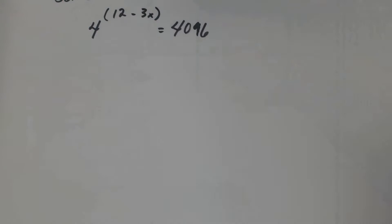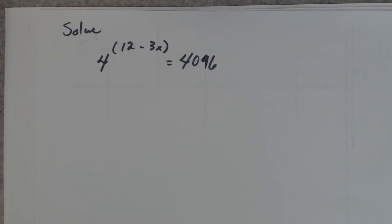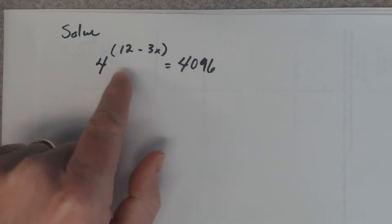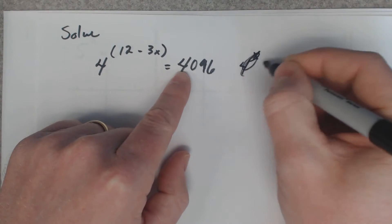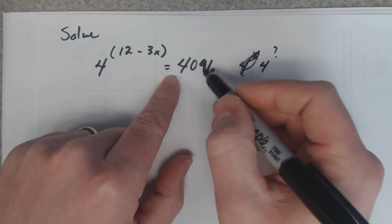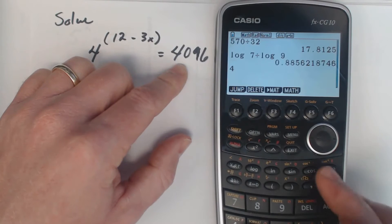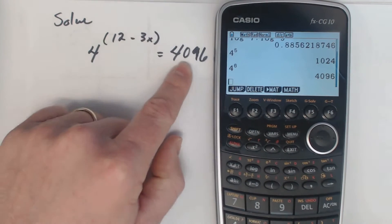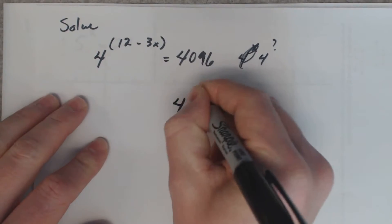So there's logarithms in a nutshell. Let's try to solve this exponential here. Can I rewrite this as four to some power? Do you know your powers of four up to 4,000? Four to the fifth, I guess maybe. Nope. Four to the sixth. That might be it. Yeah. Four to the sixth is 4,096. So we can rewrite that as four to the sixth power.